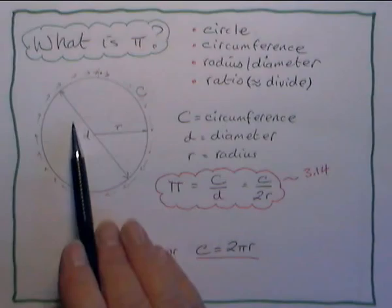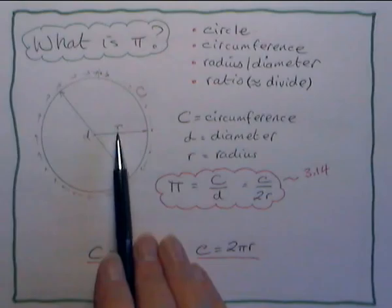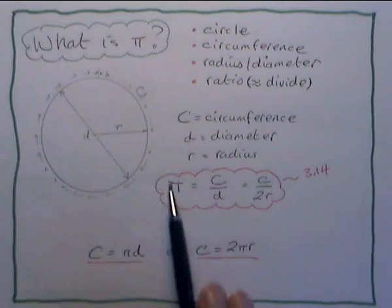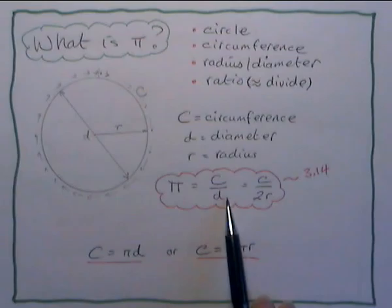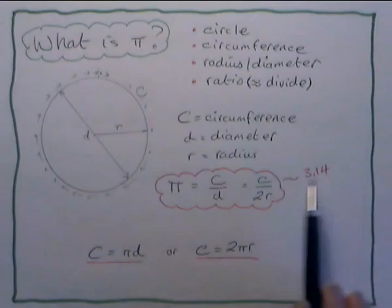And a very important relationship is that the diameter here is twice the radius. So now we know the meaning of all these words, we can answer the question, what is pi? Pi is simply the ratio of the circumference of a circle to its diameter. And it's about 3.14.